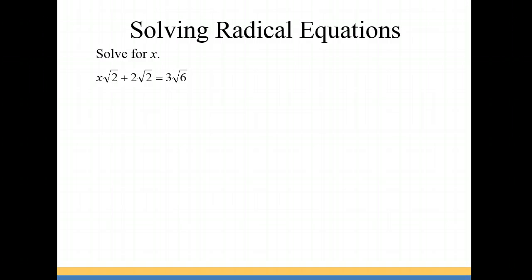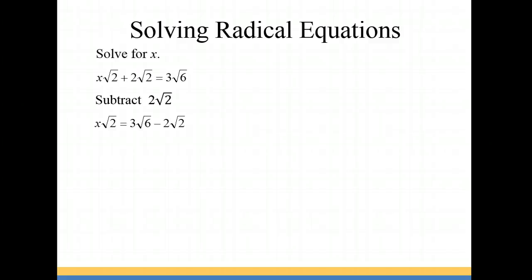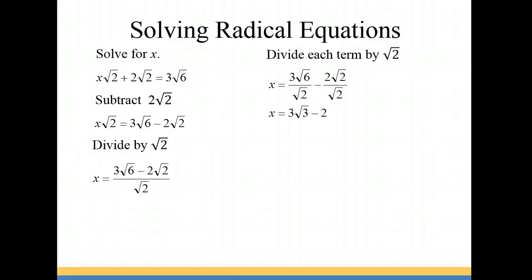For our next problem we have x√2 plus 2√2 equals 3√6. So for our first step we're going to bring the 2√2 over to the other side by subtracting it from both sides of the equation. Now 3√6 and 2√2 are not like terms, so our next step will be to divide by √2. The √2 can be divided into both of those terms: 3√6 divided by √2 gives 3√3, and negative 2√2 divided by √2 gives negative 2. So our final answer is x equals 3√3 minus 2.